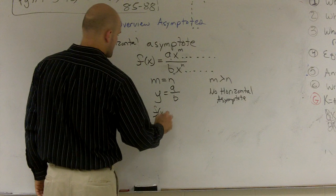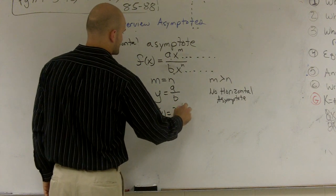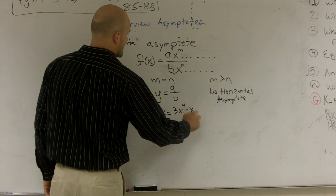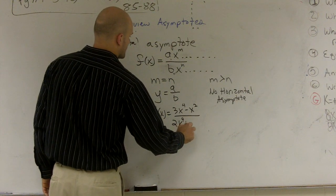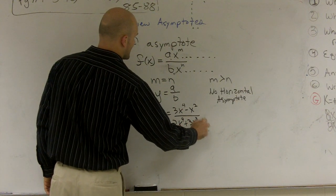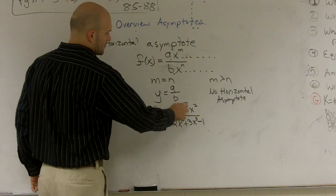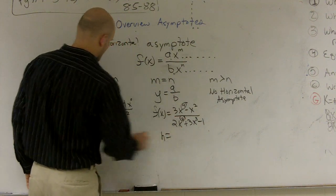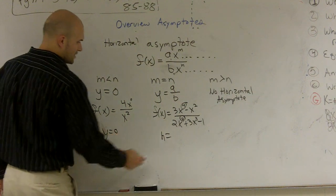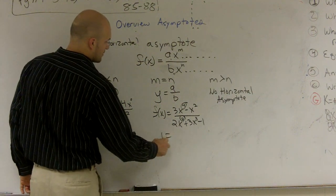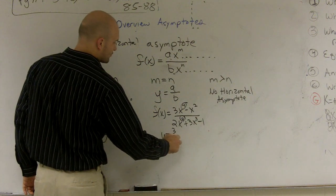Here, I can do f of x equals 3x to the 4th minus x squared over 2x to the 4th plus 3x cubed minus 1. Since they're equal, my y is equal to 0. Here, my y would be equal to 3 halves. You take your two coefficients and divide them.